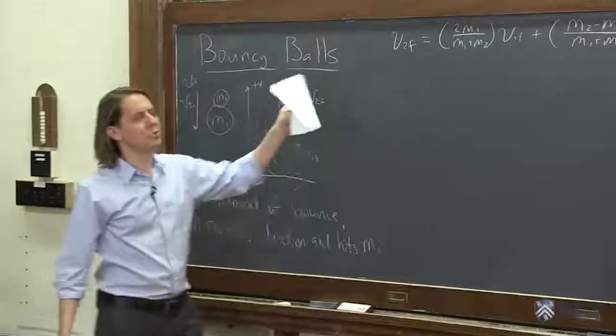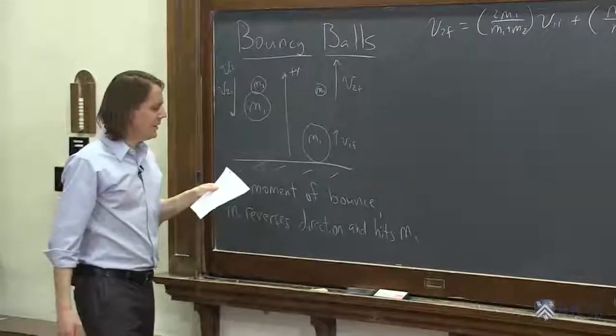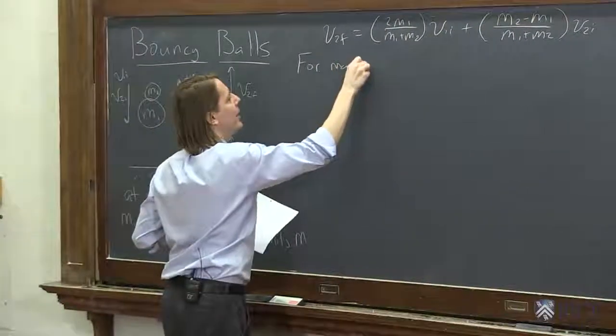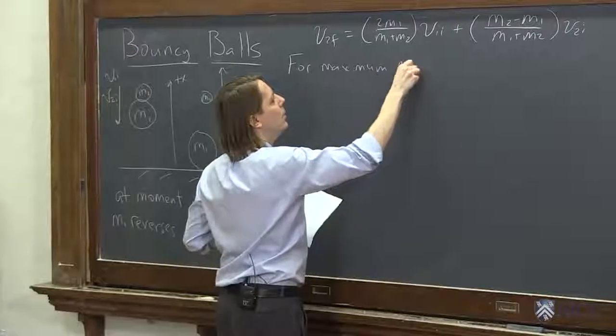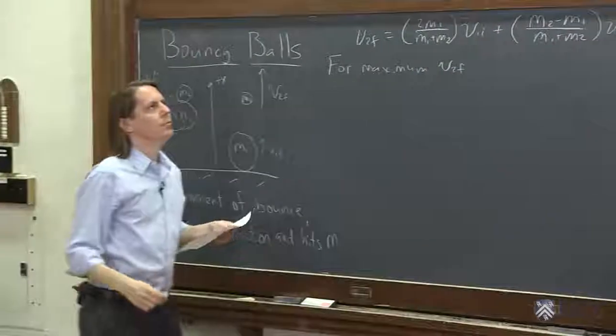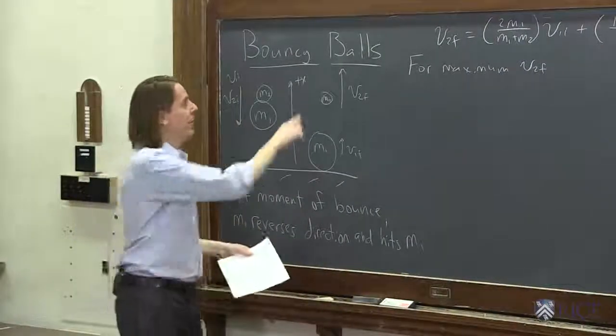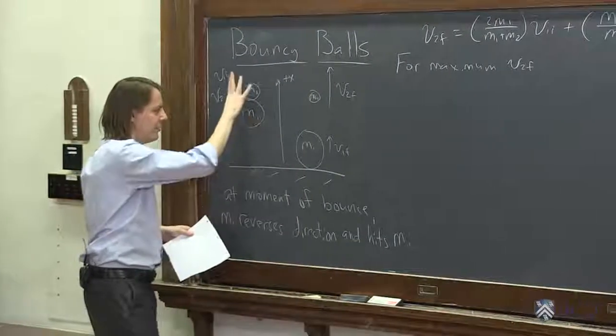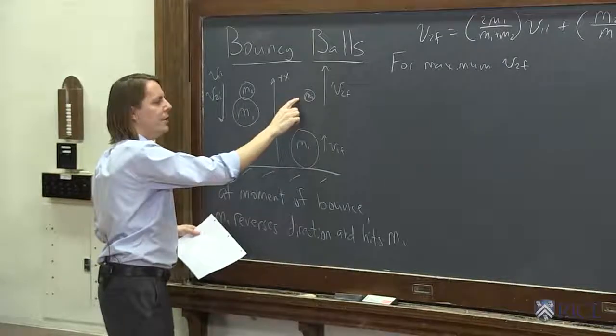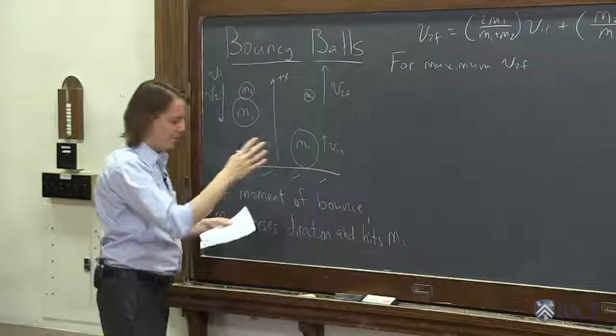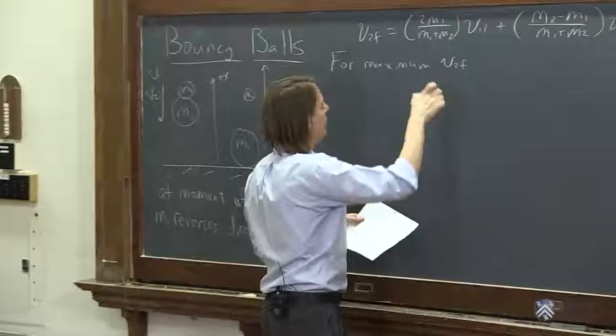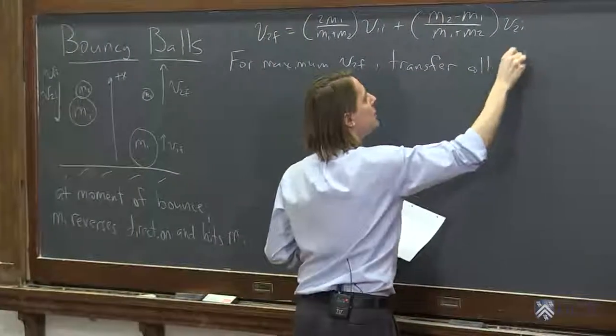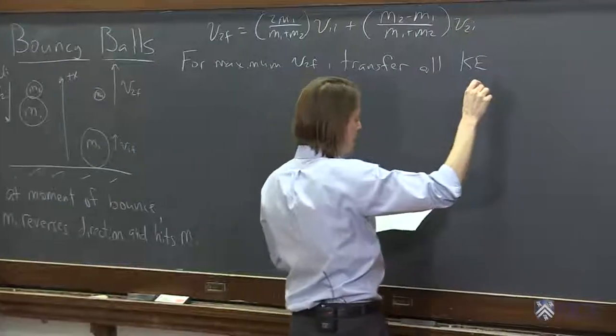Well, you don't actually do it with that expression. What you want to do is say, for maximum V2f, pretty much you want all the kinetic energy to go into this mass. We have a finite amount of kinetic energy, however fast they're going when they hit. You want it to all go here. You want none of it to go here. So for the maximum V2f, transfer all kinetic energy to M2.